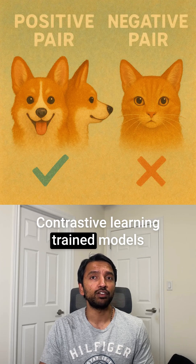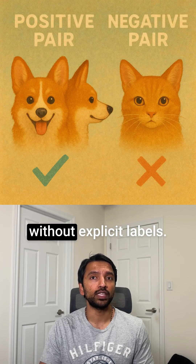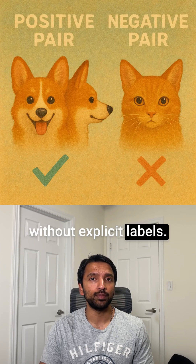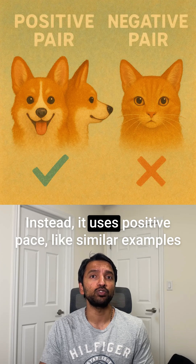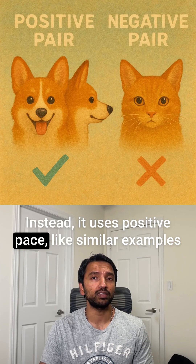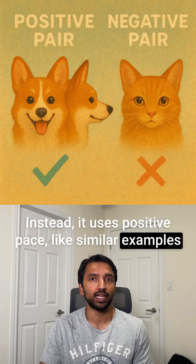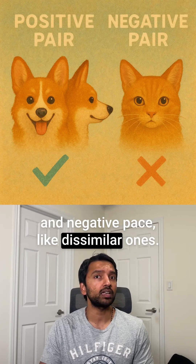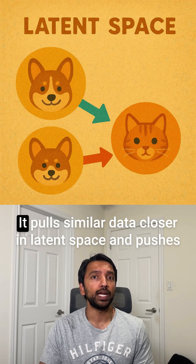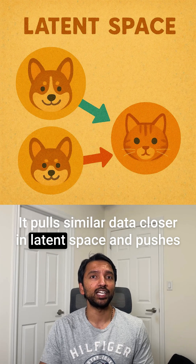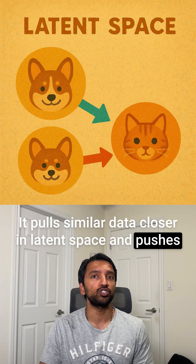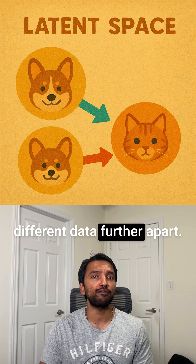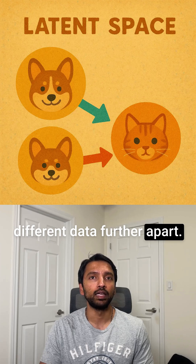Contrastive learning trains models without explicit labels. Instead, it uses positive pairs — similar examples — and negative pairs — dissimilar ones. It pulls similar data closer in latent space and pushes different data further apart.